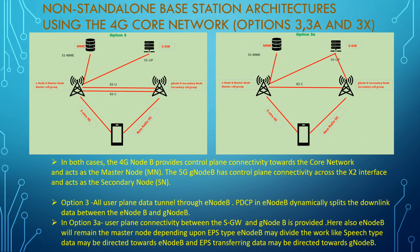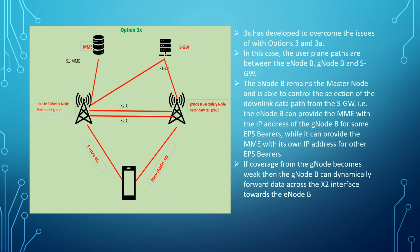Option 3x came about to overcome the issues in Options 3 and 3a, and it is the one being practically deployed. In Option 3x, the user plane path is between the eNodeB, gNodeB, and the Serving Gateway. You can see in the diagram how this user plane path is connected, and the remaining architecture stays the same.